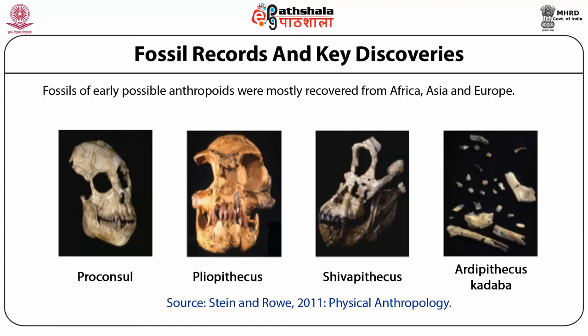Pliopithecus appeared around 16 million years ago. They are smaller in size, almost like the Gibbon of the present day. They were leaf-eaters and semi-brachiators without a prehensile tail. However, they do not show skeletal adaptation like true brachiators such as Gibbon.